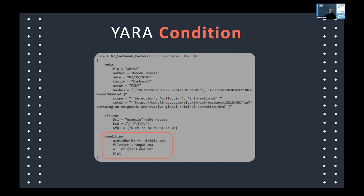Once you have your PE and file size conditions, you add your unique strings. A common pattern is naming a string FP1 for false positive — if someone reports a false positive, you look at the bytes of that file, find distinguishing characteristics, and add that hex byte sequence with 'and not $FP1' in your condition. You can add a false positives field in the meta, and an updated date field. All of this is completely up to you in terms of how you create your YARA rule.